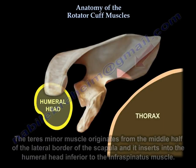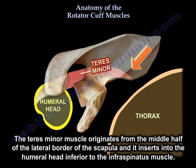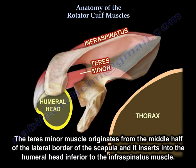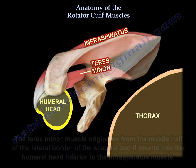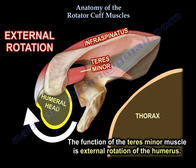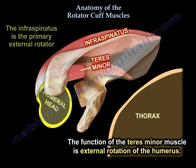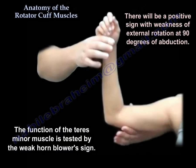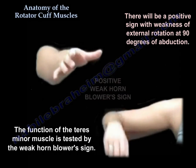The teres minor originates from the middle half of the lateral border of the scapula and inserts inferior to the infraspinatus. Its function is also external rotation of the humerus. It is tested by the horn blower sign, which assesses weakness of external rotation at 90 degrees of abduction.